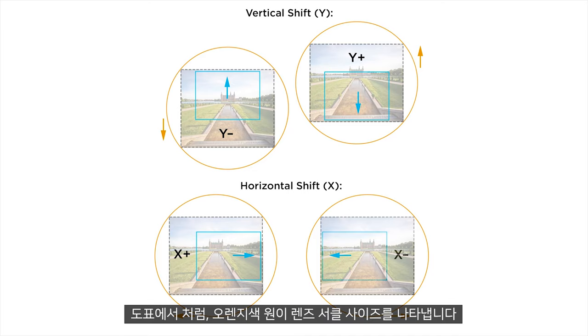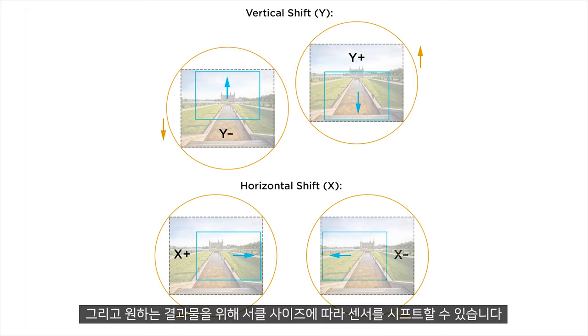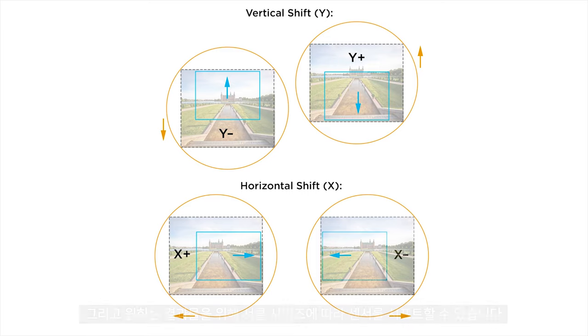As we can see from this diagram, the orange circle indicates the lens circle size, and then we can shift the sensor in relation to this for any desired results.